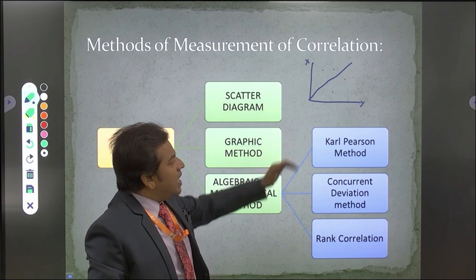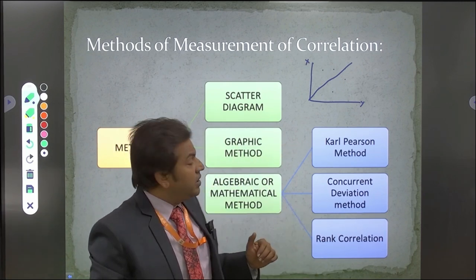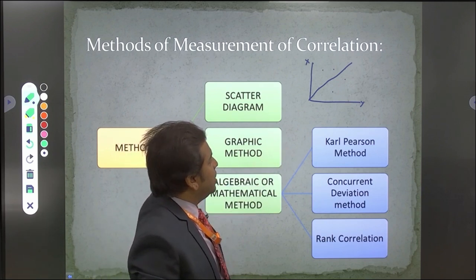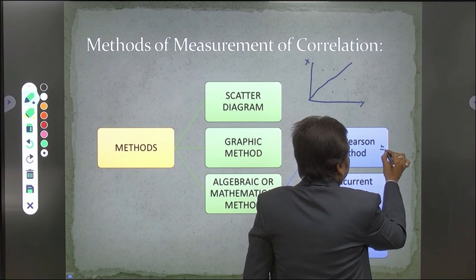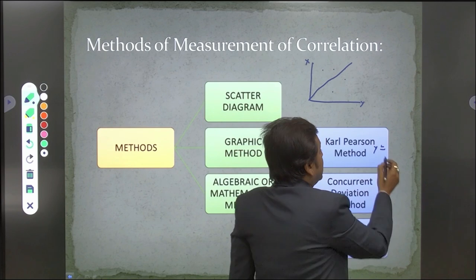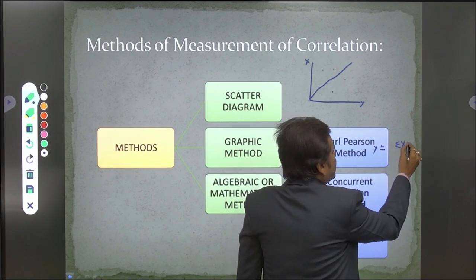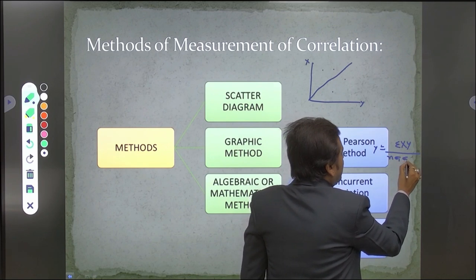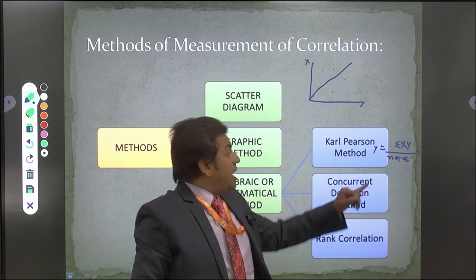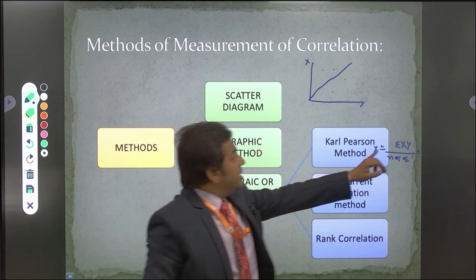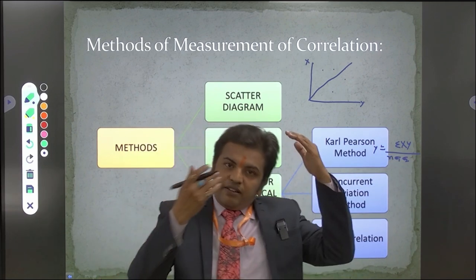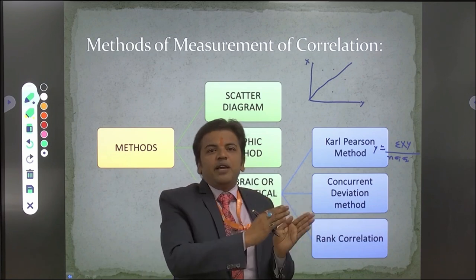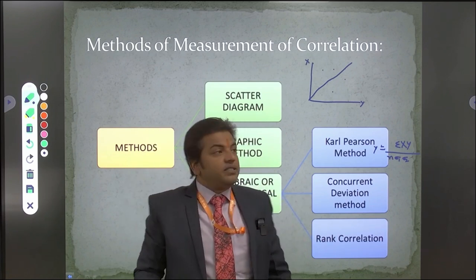The first mathematical method is the Karl Pearson method. This is the most highly used method to calculate correlation. The formula for the Karl Pearson coefficient of correlation is: r = summation(XY) divided by n times standard deviation 1 times standard deviation 2. Here, summation XY stands for the sum of the products of X series and Y series values multiplied together.